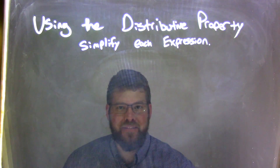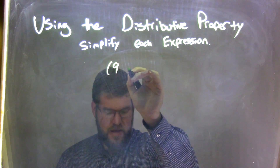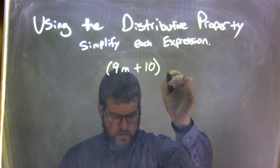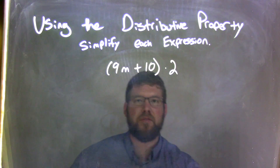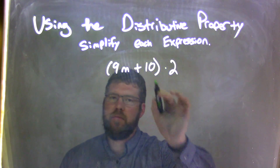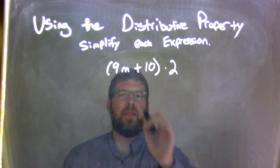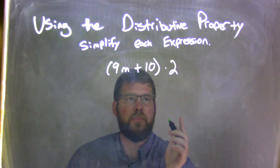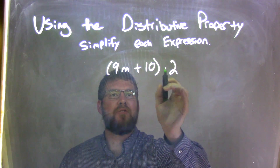So, if I was given this expression — 9m plus 10, times 2 — the times 2 is on the outside, on the right side. Well, we think about what's inside the parentheses. Can we simplify that first? The answer is no. There are no like terms here. The 9m and the 10 are not like terms, we cannot add them. But the 2 is on the outside, and it's separated by multiplication, so we can distribute that 2.